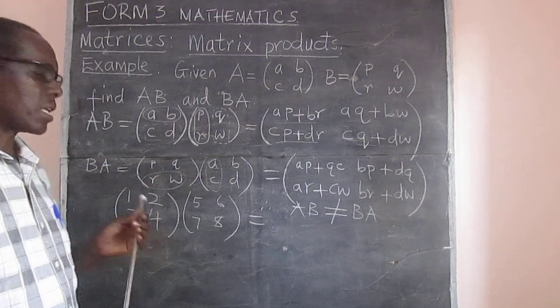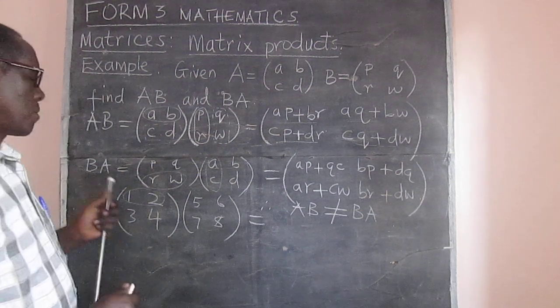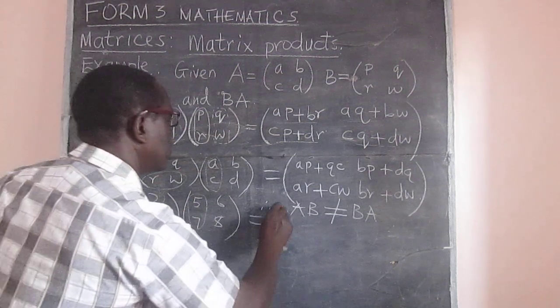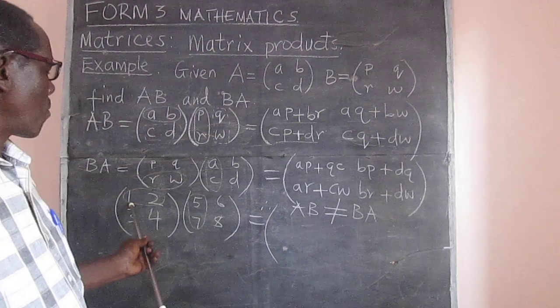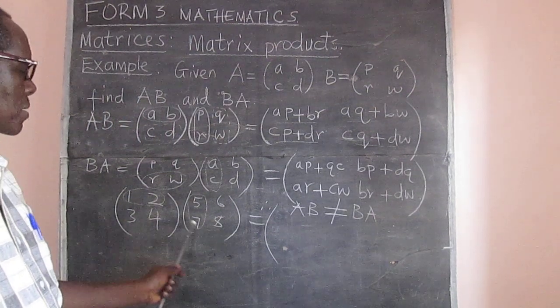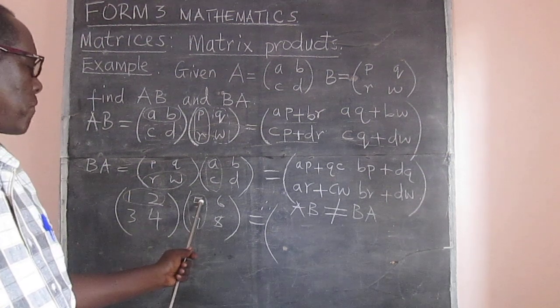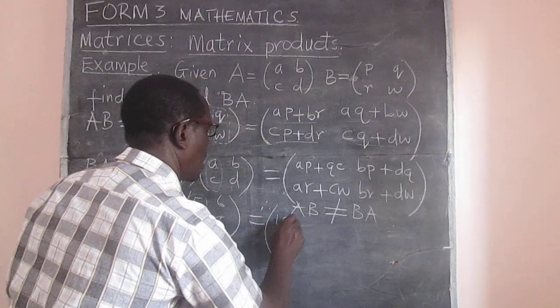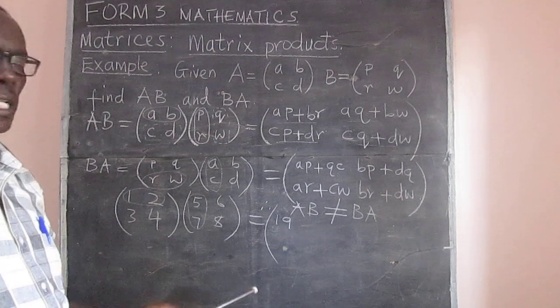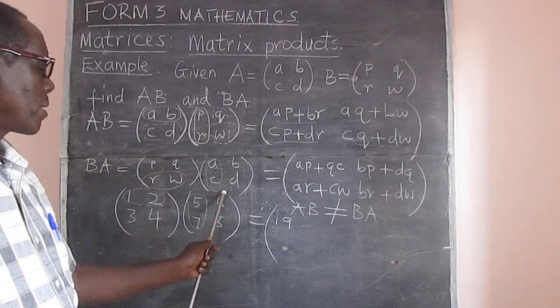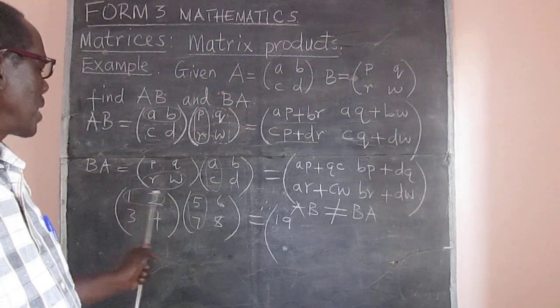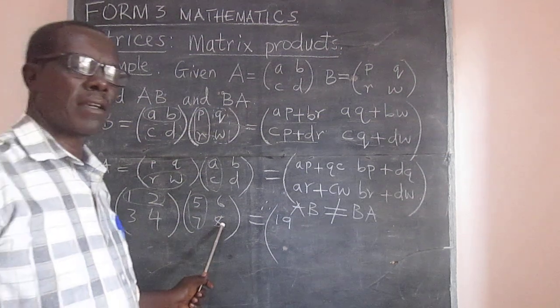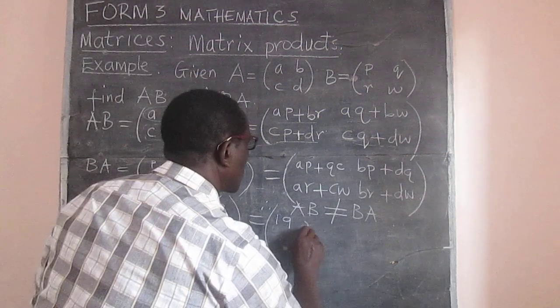And you see, it's not difficult. We take that, we take one and two, and multiply by five and seven. And what do we get? One multiplied by five, plus two multiplied by seven. And that's one multiplied by five, and that gives us 19, because it's five plus fourteen. And then again, we take the first row, multiply by the second column, and that gives us one multiplied by six, that's six, plus two multiplied by eight, that's sixteen. Six plus sixteen, and that gives us twenty-two.